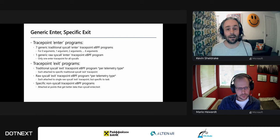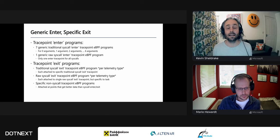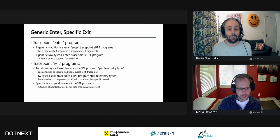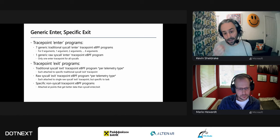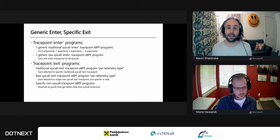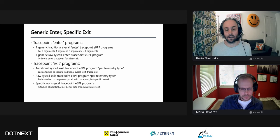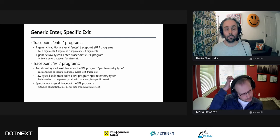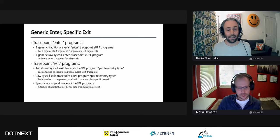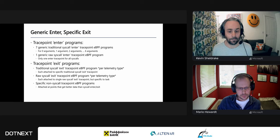For traditional trace points, since syscalls can only have up to six arguments each being a 64-bit number, instead of a specific syscall enter program for every trace point we have seven generic enter programs — one for zero arguments, one for one, up to six. For raw syscalls there's literally one entry point for the entire syscall architecture. On exit we have an exit program for each type of telemetry to collect — for traditional trace points that's per-syscall exit points, for raw syscalls it's the generic raw exit point, and then there are non-syscall trace points as well.